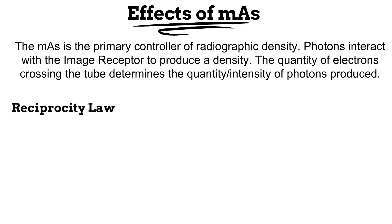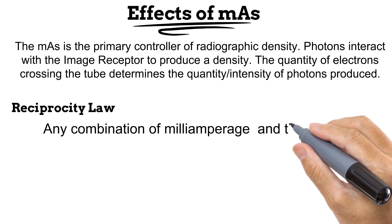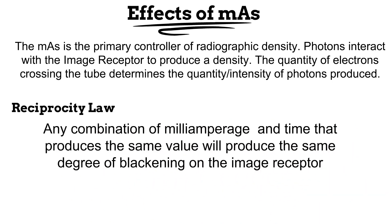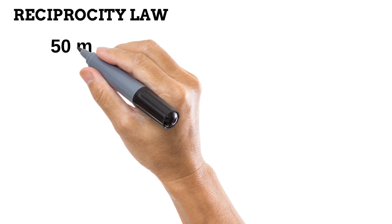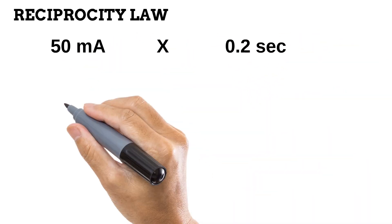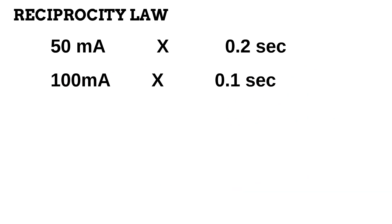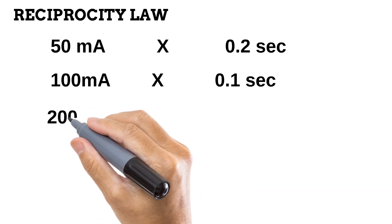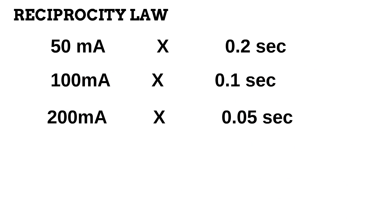At this point, we'll talk about the reciprocity law. It states that any combination of milliamperage and time that produces the same numerical value will produce the same degree of blackening on the image. Let's illustrate this with an example. If you have three sets of factors: 50mA in 0.2 seconds, 100mA in 0.1 seconds, 200mA in 0.05 seconds. These three sets of factors will produce the same degree of blackening because they all arrive at a combined value of 10 mAs. This is the reciprocity law. It is worth mentioning that the reciprocity law will not be valid when the exposure time is too long or too short.